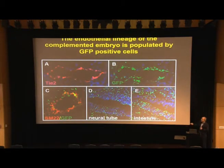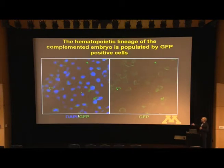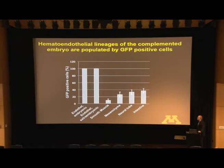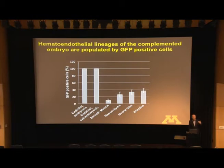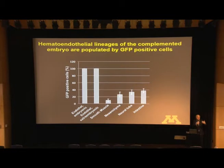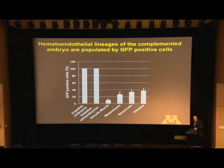Histologically, in these complemented embryos every single TIE2-expressing endothelial cell is also expressing GFP, and every single blood cell is also GFP positive. We quantified our studies and confirmed every single blood cell and every single endothelial cell was GFP labeled. This confirmed a cell-autonomous defect, as rescuing the block showed that host cells did not give rise to these lineages. There was also chimeric contribution to other lineages, somewhere between 10% and 30%.